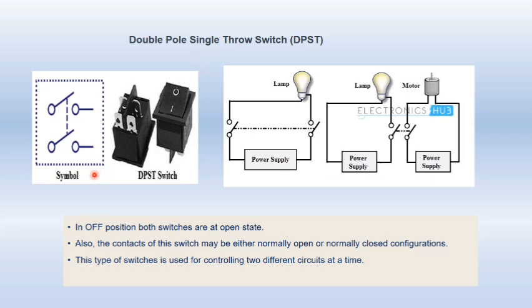Next, we have the double pole single throw switch. In this figure, you can see its symbol and picture. It has four terminals at the back side. In off position, both the switches are at open state. This double pole single throw switch is exactly like two single pole single throw switches connected together, both working in the same direction, so you can close or open both of them at the same time. The contact of this switch may be either normally open or normally closed. In this diagram you can see this switch is controlling two circuits — a lamp and a motor. If you close this switch, both the lamp and motor will be turned on.